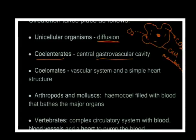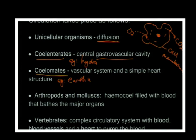Then we have the coelomates - for example, earthworms. They have a vascular system and a very simple heart, so they have a closed blood system. The blood flows in one direction and back in the other, and there's a little heart that pumps it - a very basic circulatory system.